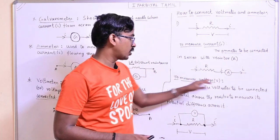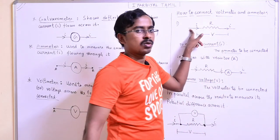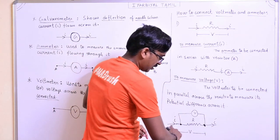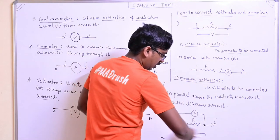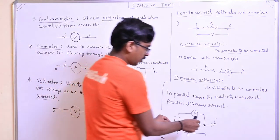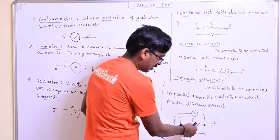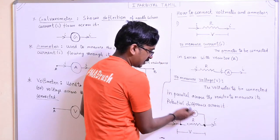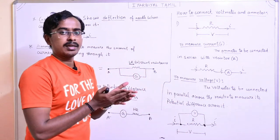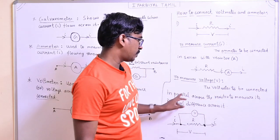To measure voltage - this is a resistor. We measure the current in series with an ammeter. To measure voltage across the resistor, we use a voltmeter. The voltmeter has A terminal and B terminal. We connect it across the resistor - the voltmeter is in parallel, side by side with the resistor. The voltmeter will give the correct voltage. The voltmeter needs to be connected in parallel across the resistor to measure its potential difference.